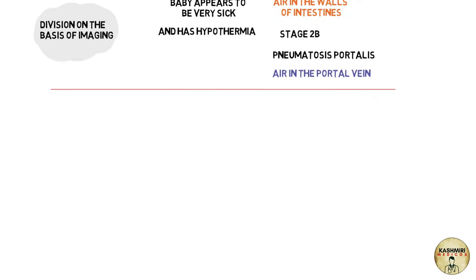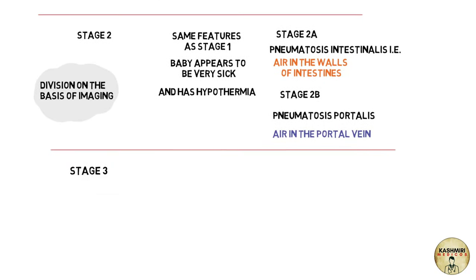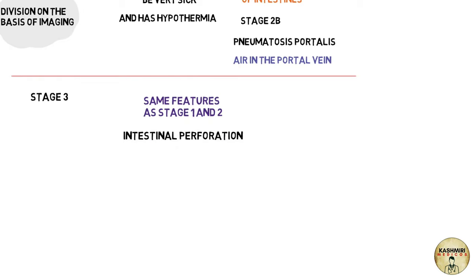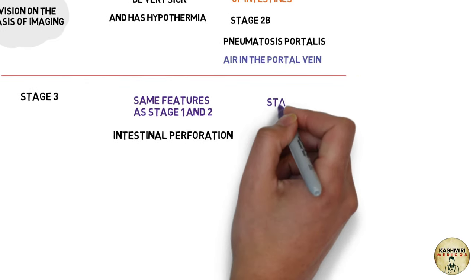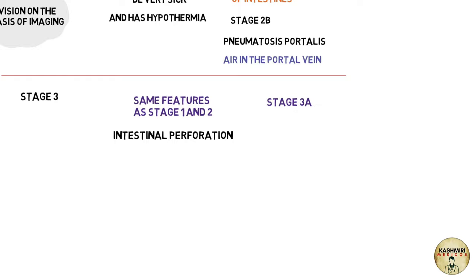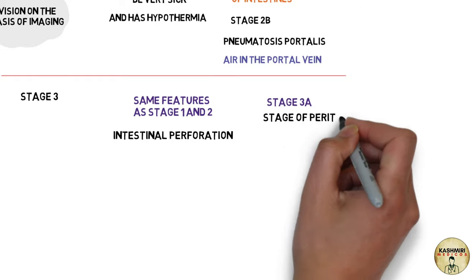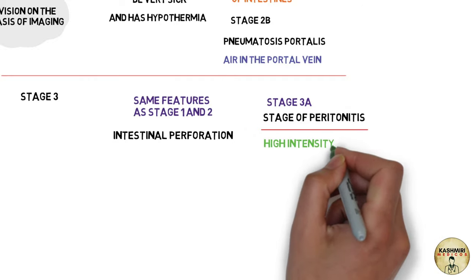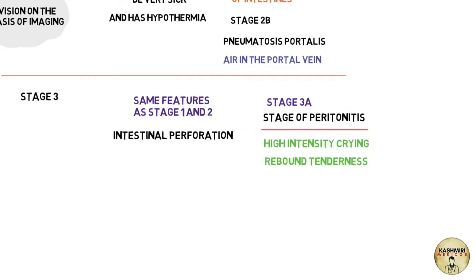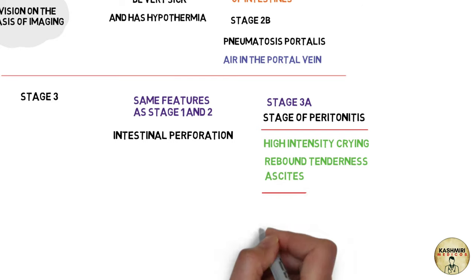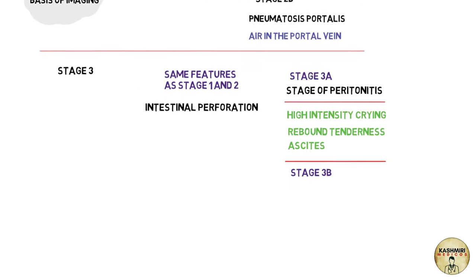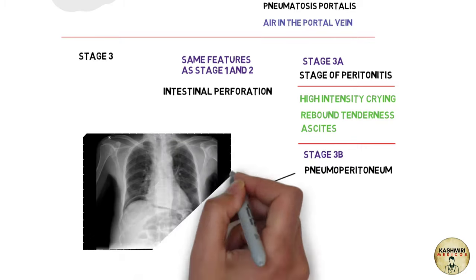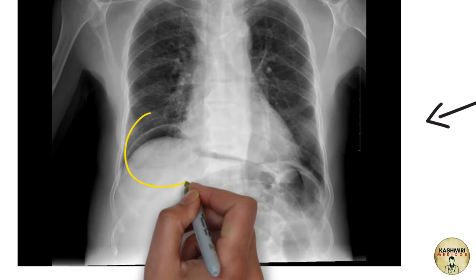In stage three, the same features of stages one and two are present, but the distinctive feature is intestinal perforation. Stage 3A is the stage of peritonitis — the child presents with high-intensity crying, rebound tenderness, and ascites. In stage 3B, there is pneumoperitoneum; on an X-ray, air under the diaphragm is highly suggestive of pneumoperitoneum.